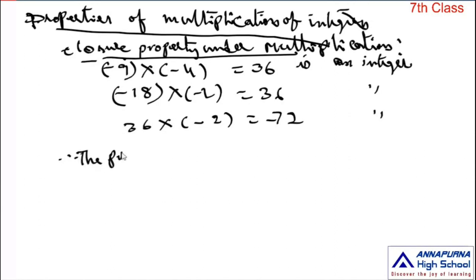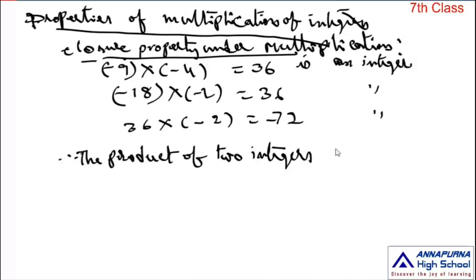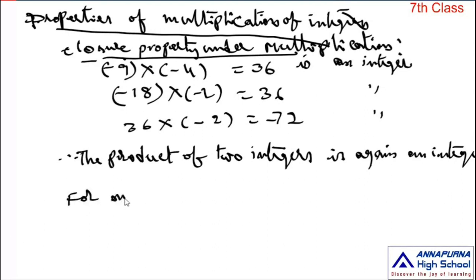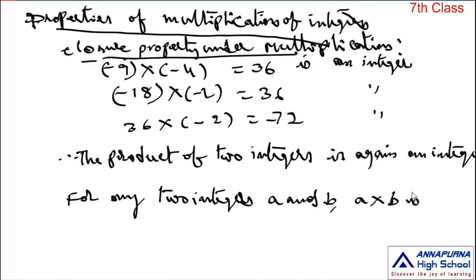The product of two integers — whether both positive, both negative, or one positive and one negative — is always an integer. For any two integers a and b, a into b is an integer. This is the closure property under multiplication.